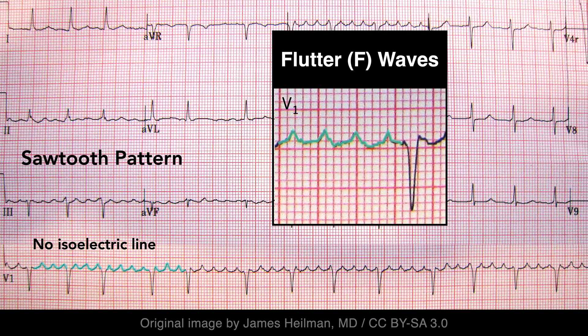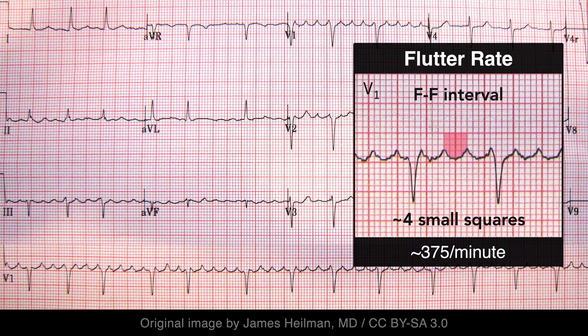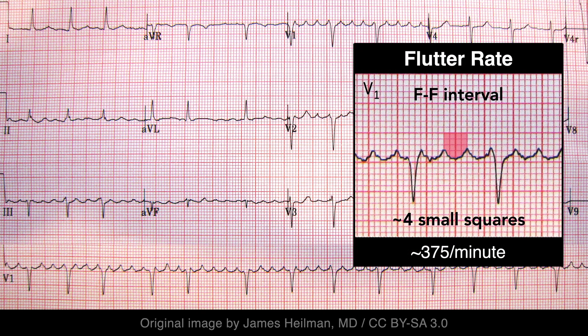The absence of an isoelectric line between the atrial flutter waves results in a sawtooth appearance. The flutter rate is typically between 250 and 350 per minute. This can be measured by dividing 60 by the time interval between the peaks or troughs of the flutter waves. Alternatively, divide 1500 by the number of small boxes between them.